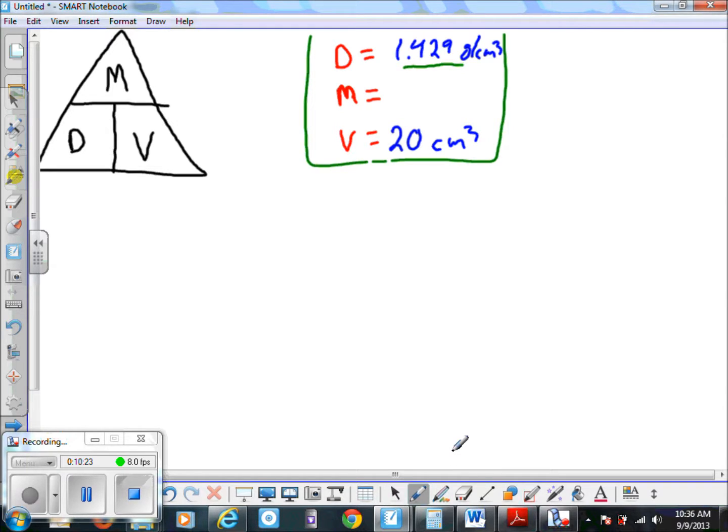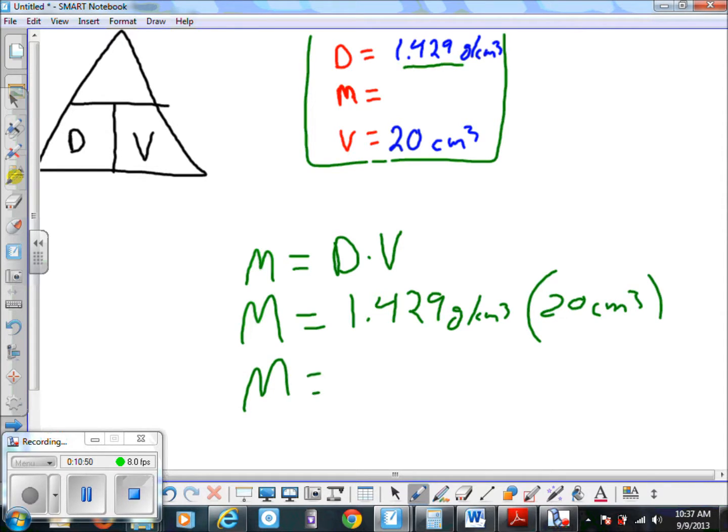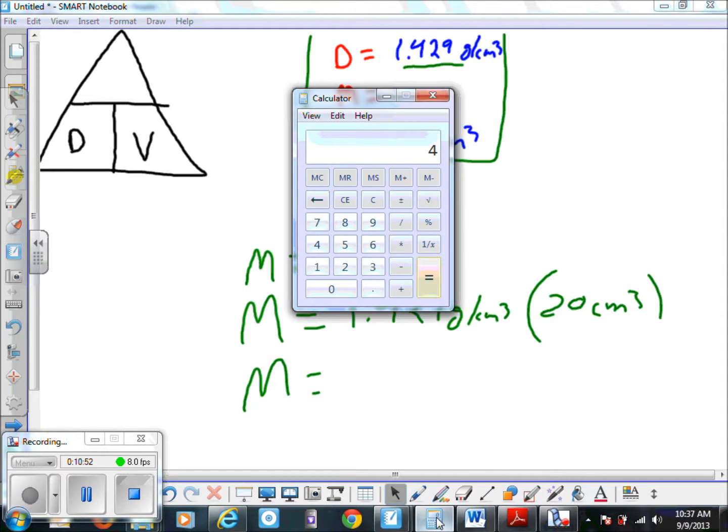We're looking for mass, so what you do then is use your formula again. We cancel out our mass and we see the orientation is density times volume. In this case, mass is equal to 1.429 grams per cubic centimeter times 20 cubic centimeters.